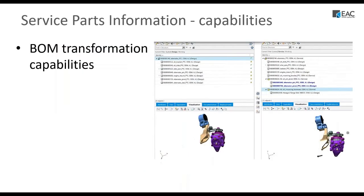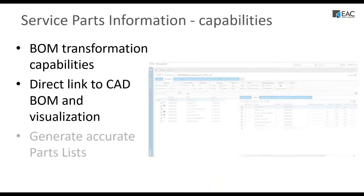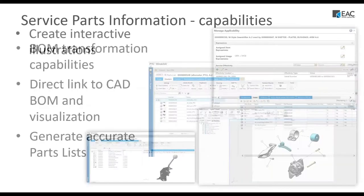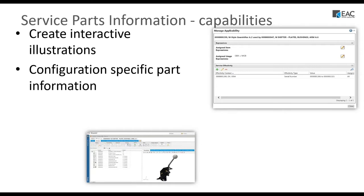First, we need to talk about the service parts or downstream deliverable bill of material from engineering. We're going to show BOM transformation capabilities and show that it links back to the CAD data — we don't have to recreate something new or start over. We'll link directly back to the original CAD model, then create parts lists. We can also create interactive illustrations, so it doesn't have to be just a PDF. You can publish to web pages and have dynamic, interactive content that customers can utilize.